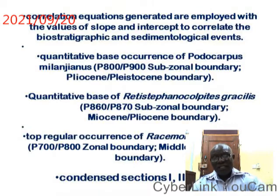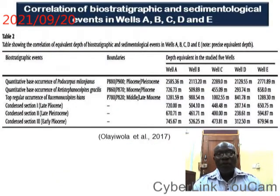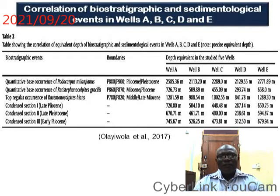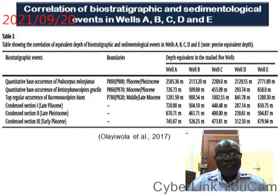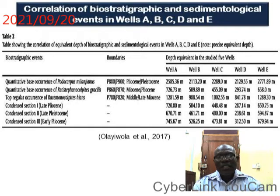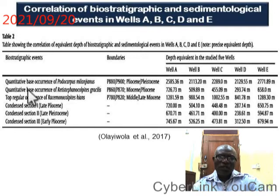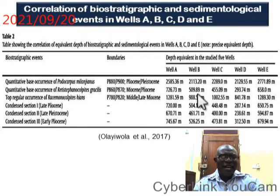The table shows the different biostratigraphic events and the sedimentological events. All in all, three quantitative-based occurrences of biostratigraphic events were delineated and three sedimentological events were delineated in the study. These were correlated at different depths, as seen in the table, at different depths of wells A, B, C, D, and E.